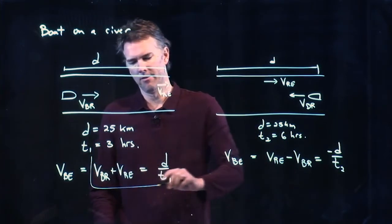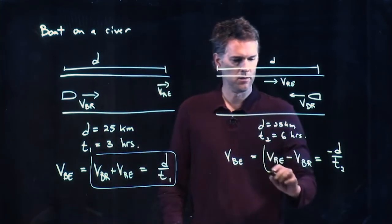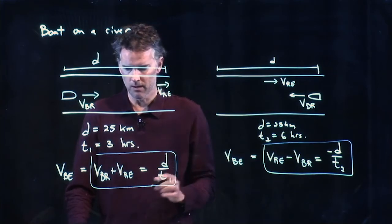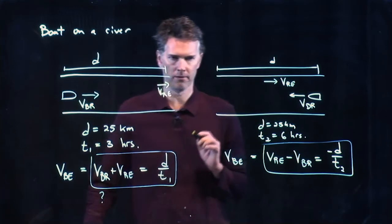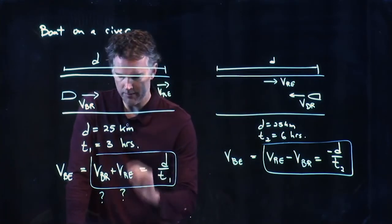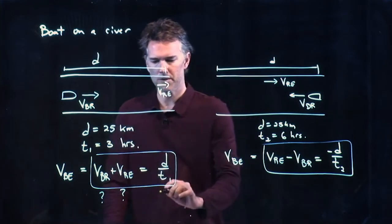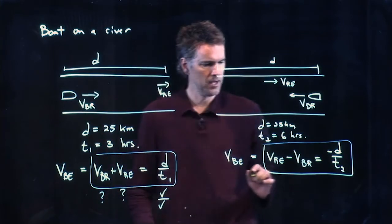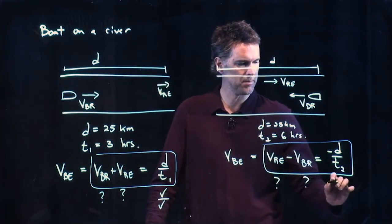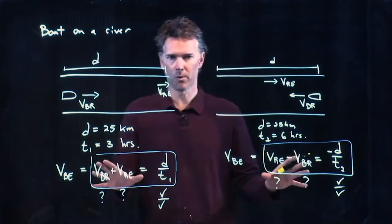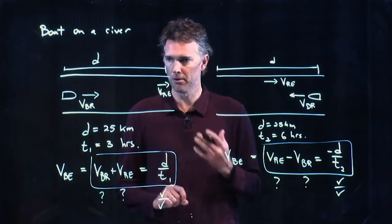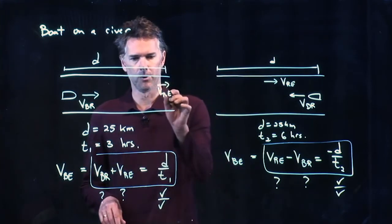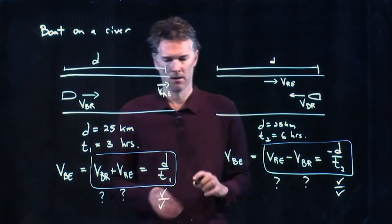And now look what we have. We have that equation. We have that equation. And we have some unknowns. What are the unknowns? Well we don't know V of the boat relative to the river. We don't know V of the river relative to the earth. We do know D and we do know T1. And same over here. Don't know that. Don't know that. But we do know that and we do know that. Two equations, two unknowns. We should be able to solve it for what we want which is the river relative to the earth. We're looking for VRE.